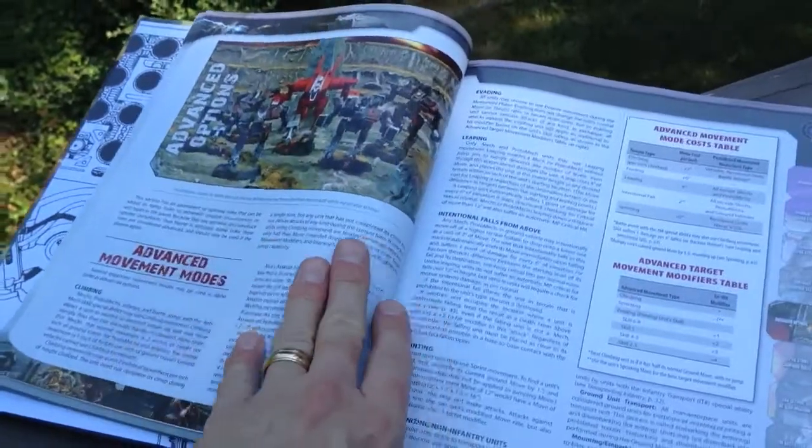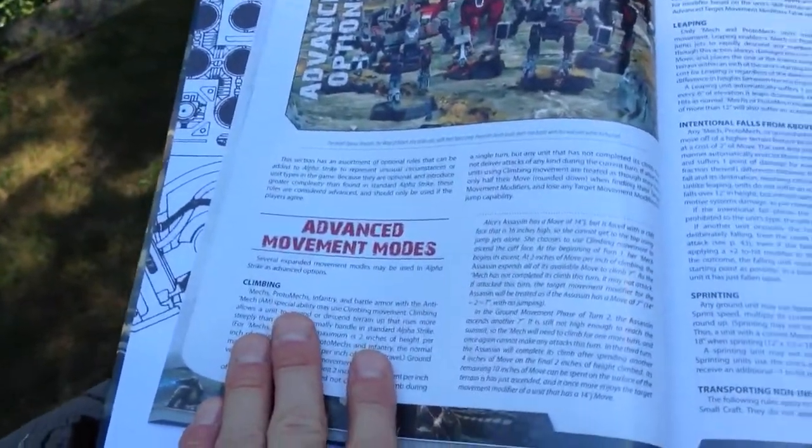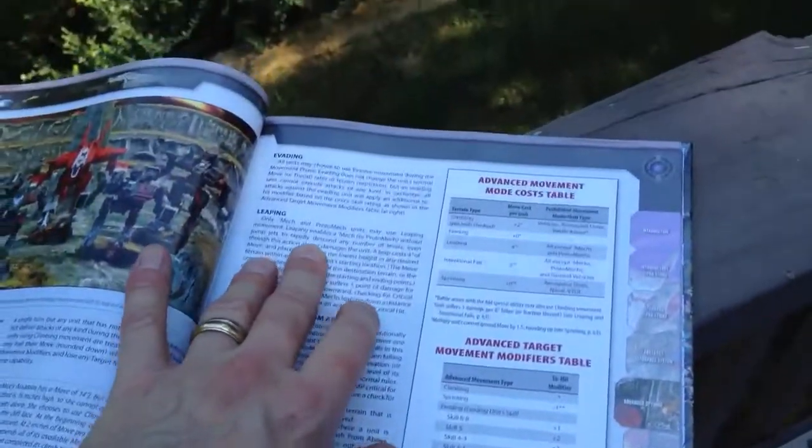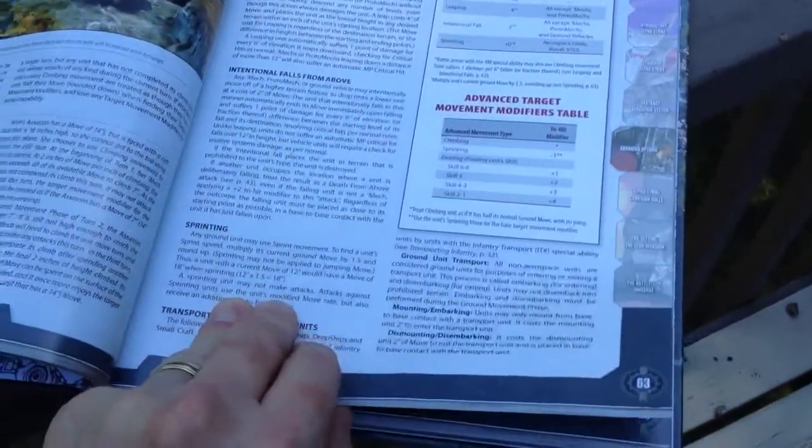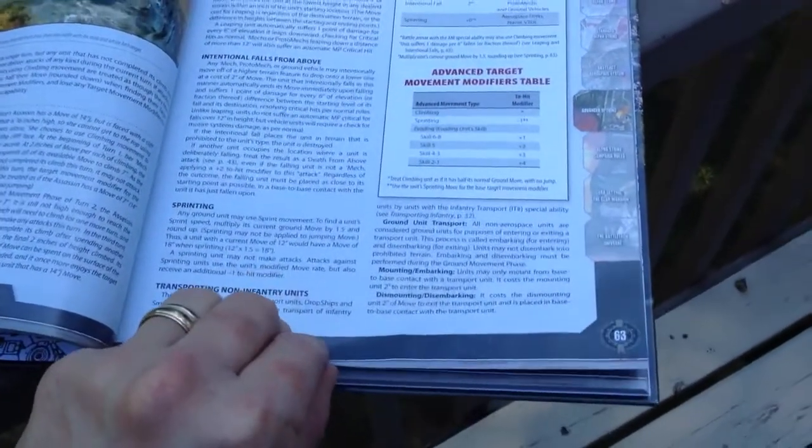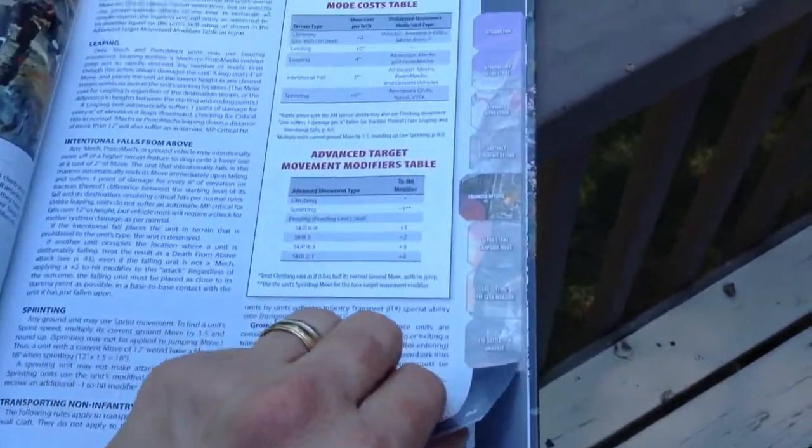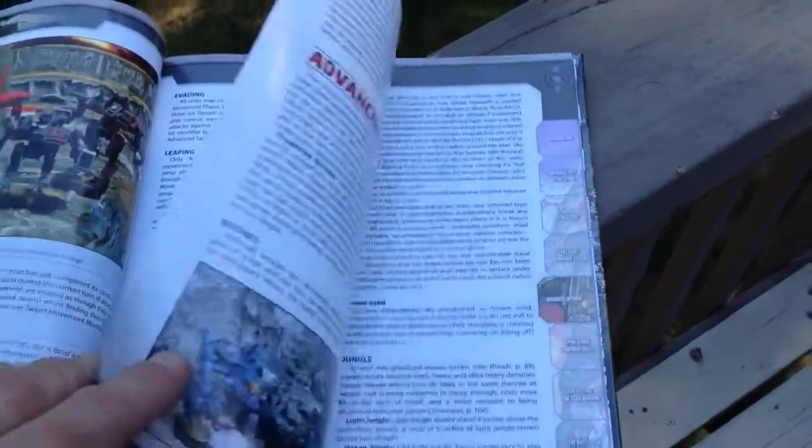And then the cool thing is there's advanced options. So then there's even more stuff you can do. You can do climbing. You can evade. That's cool. I didn't even see that one. Leaping. Intentional falls from above. Sprinting. Transporting infantry units. Just gets in a little bit more detail.